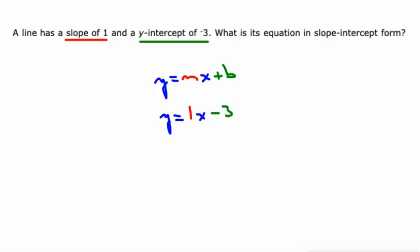And even then, I think I can go a little bit further and get rid of the one because one times x is just x, right? So how about just y equals x minus three?